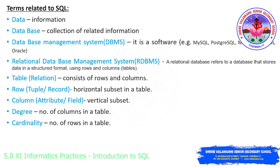Data means raw information, whereas database means a collection of related information. For example, if I have the numbers 2 and 3 in my hand, I cannot do anything with them. Only when I do some processing — like addition, multiplication, or subtraction — will I be able to get the desired output. Just having the numbers 2 and 3 on paper is just information, so that kind of information is data. This is just for your understanding.